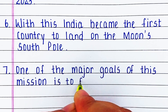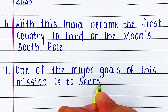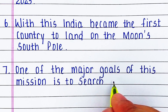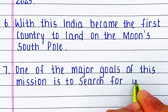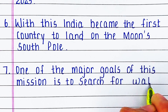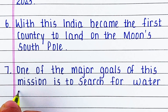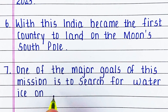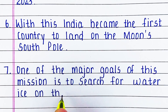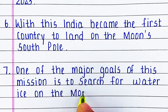Sixth line is: With this, India became the first country to land on the moon's south pole. Another goal of this mission is to search for water ice on the moon.